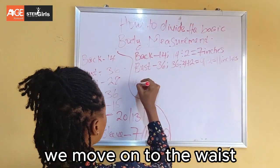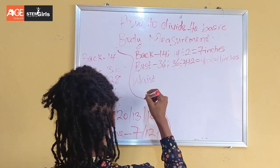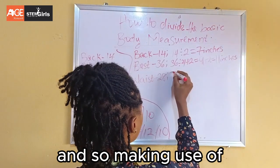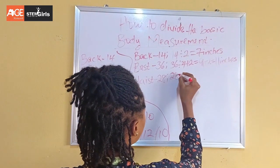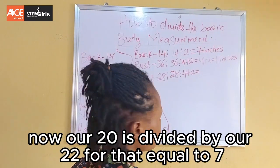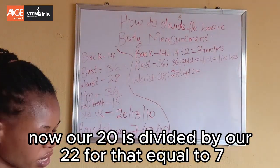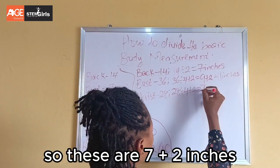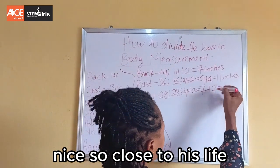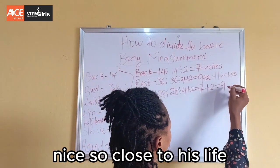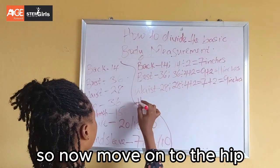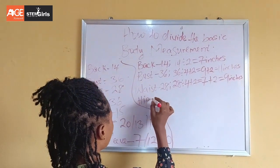We move on to the waist. Our waist is 28. So 28 divided by 4 equals 7. Then we add the 2 inches sewing allowance: 7 plus 2 is 9. So we make use of 9 inches on the fabric for the waist.